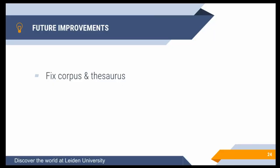For future improvements, the first priorities are fixing the corpus and improving the thesaurus. For the corpus I'm putting together a group of archaeology students to tag documents, creating a new annotated corpus that should increase accuracy. I'm also hoping to work with the State Service for Heritage to update the ABR thesaurus by adding a column with words written as they appear in natural text. I'm also looking at using a bigger word window — currently just one word before and after — moving to five or seven words to provide more context and hopefully improve accuracy.